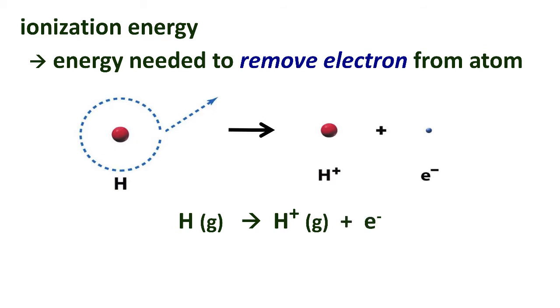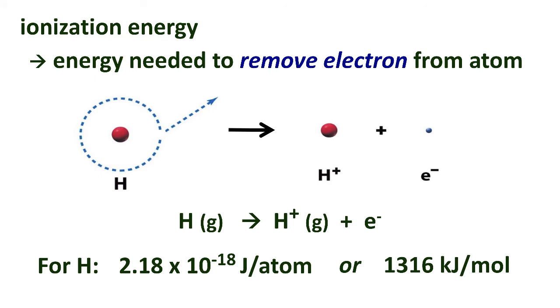We can write it as hydrogen makes H+ plus the electron. We can measure the amount of energy this takes, and for hydrogen it takes 2.18 times 10 to the 18th joules to remove its electron, to ionize it. On a per mole basis this is 1316 kilojoules to remove the electron from a mole of hydrogen atoms. We can do the same sorts of measurements to determine ionization energy for any element.